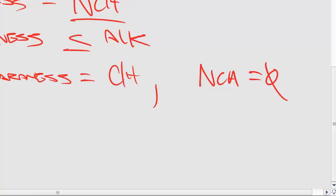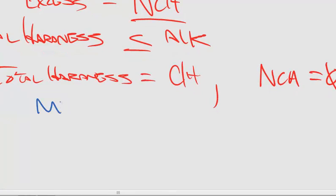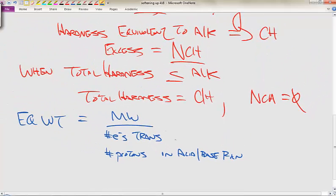Some key things that you're going to have to recall that we discussed from chapter 2 earlier this semester was looking at these equivalent weight calculations. These are going to be paramount in the work that we're going to discuss here for water softening. So equivalent weight is equal to the molecular weight all that divided by the number of electrons transferred in a redox reaction or the number of protons in an acid base reaction.